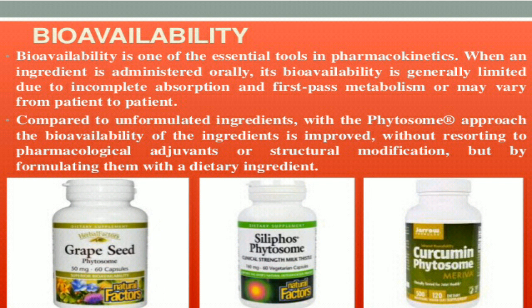Many phytoconstituents have less bioavailability because they have less absorption through the skin or systemic circulation. Examples include grape seeds, silymarin, and curcumin — these are the main active phytoconstituents. Grape seed is used as an antioxidant, silymarin is used as a hepatoprotective drug, and curcumin is used as an anti-cancer drug. We can increase their bioavailability by formation of phytosomes.